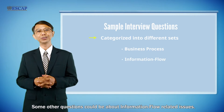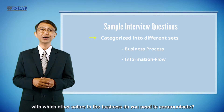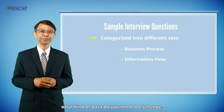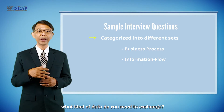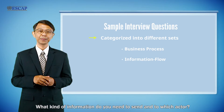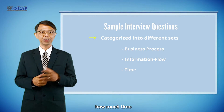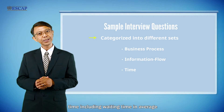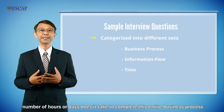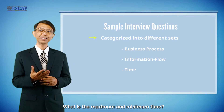Some other questions could be about information flow related issues — for example, with which other actors in the business do you need to communicate, what kind of data do we need to exchange, or what kind of information do we need to send and to which actor. There could also be questions related to time — for example, how much time including waiting time, the average number of hours or days to complete the entire business process from beginning to end, or what is the maximum or minimum time.